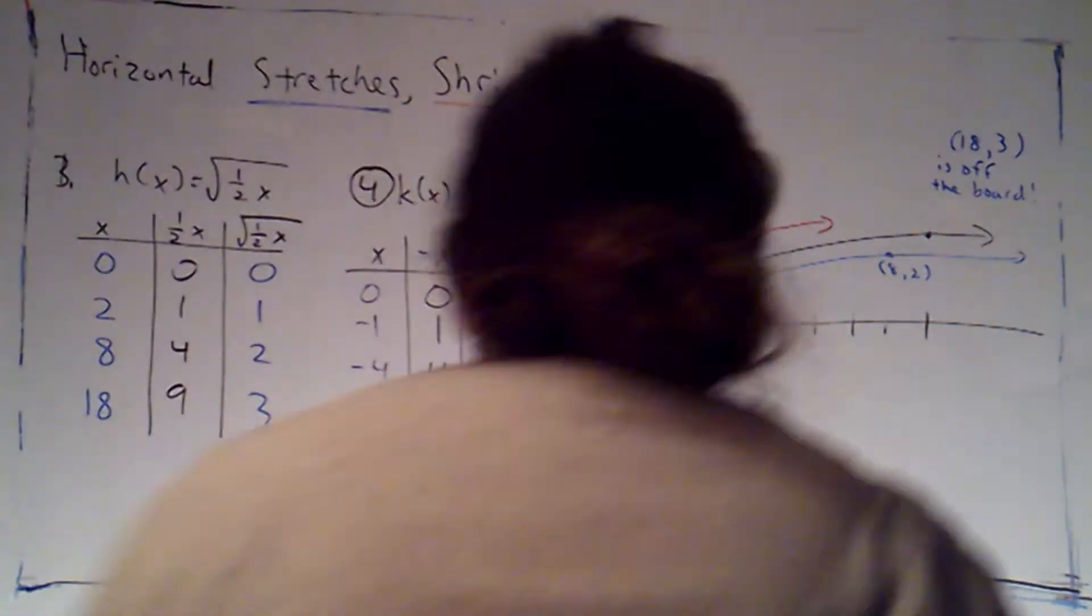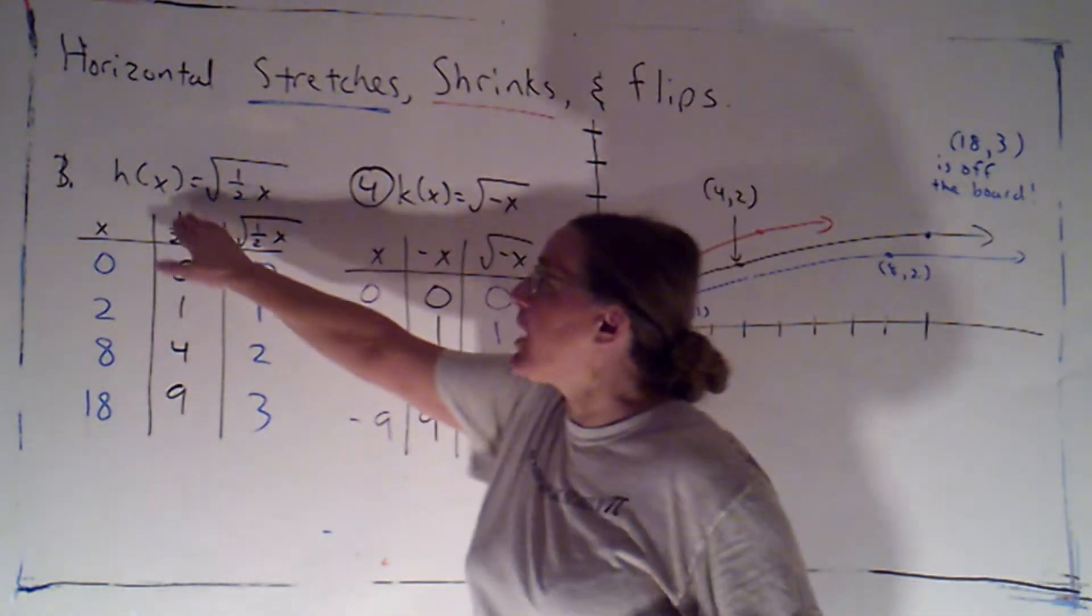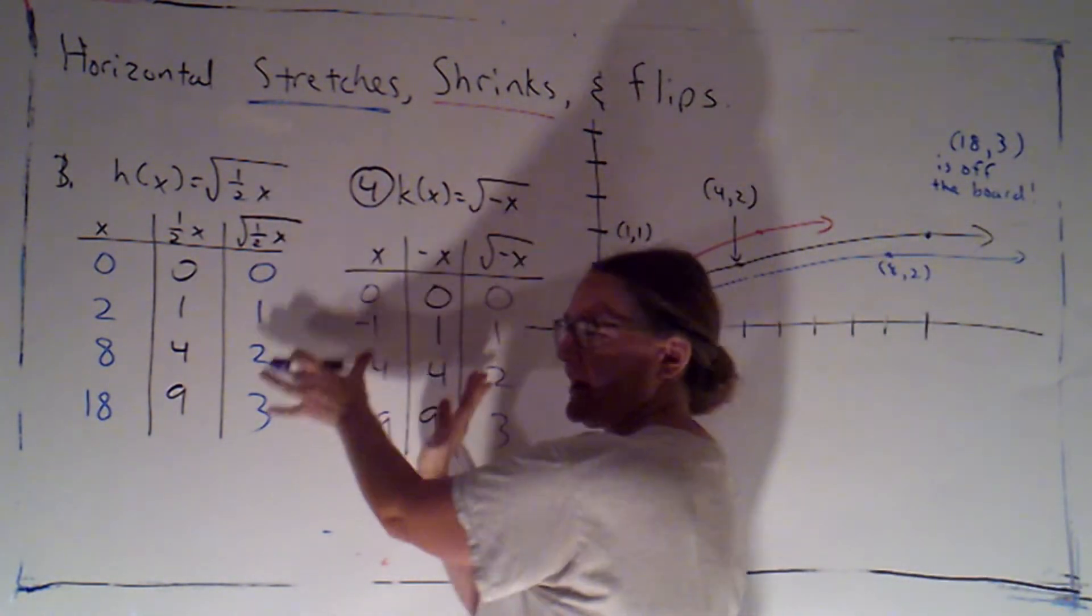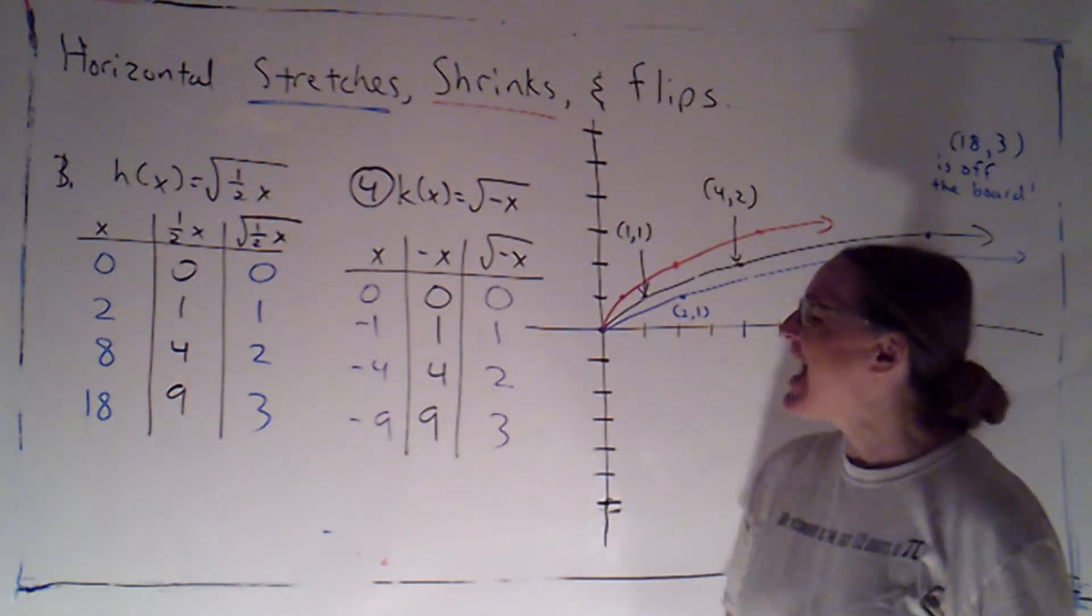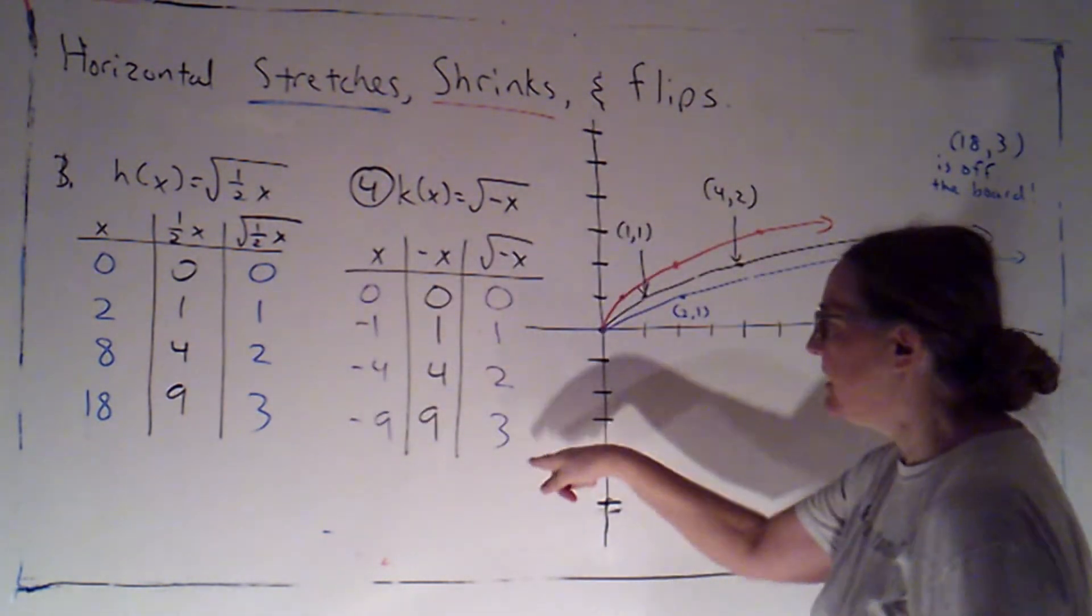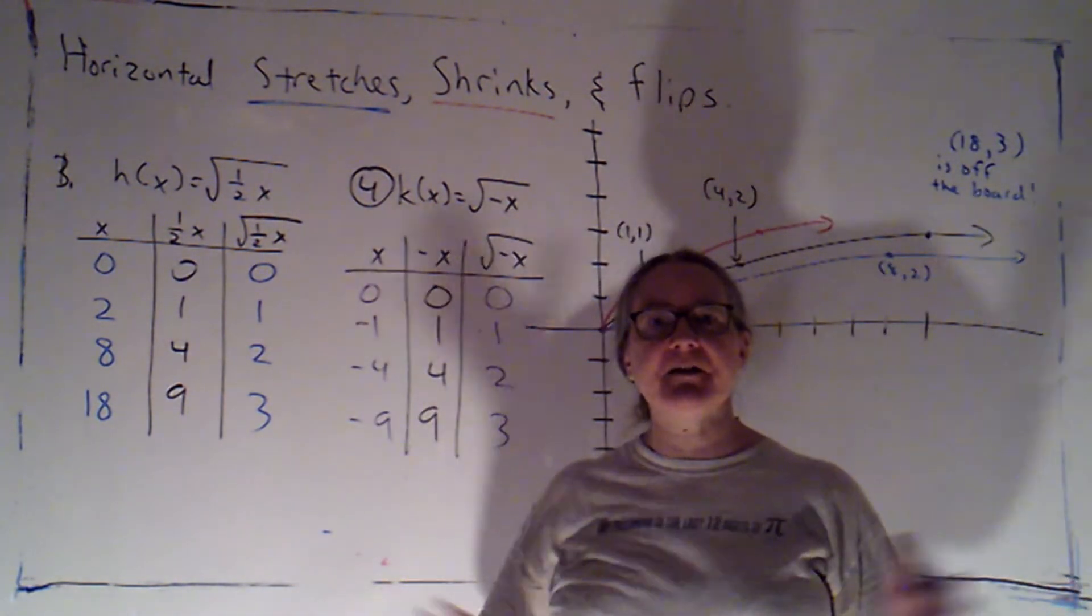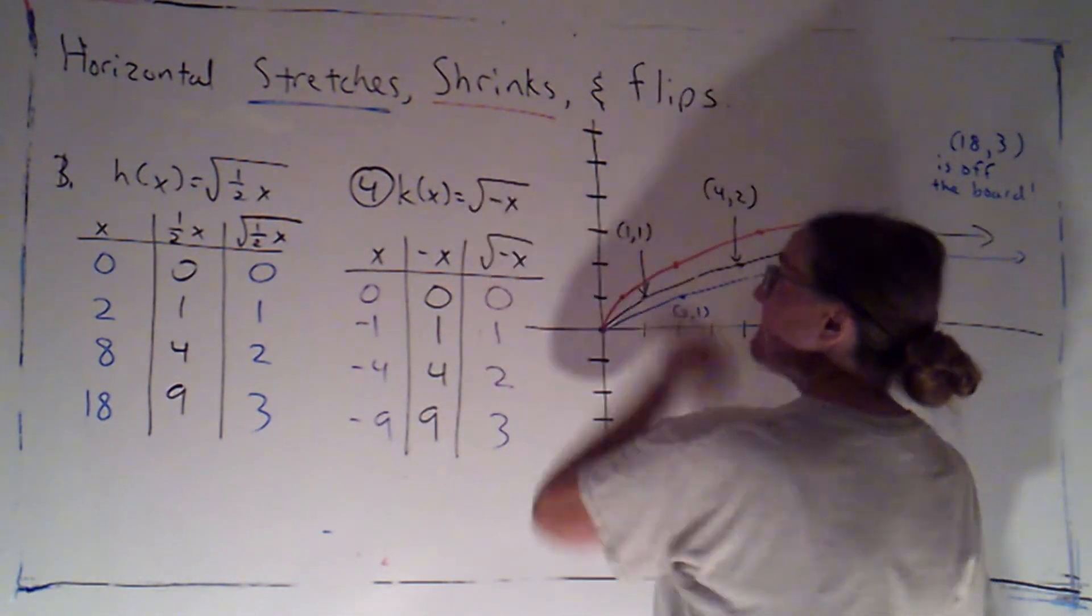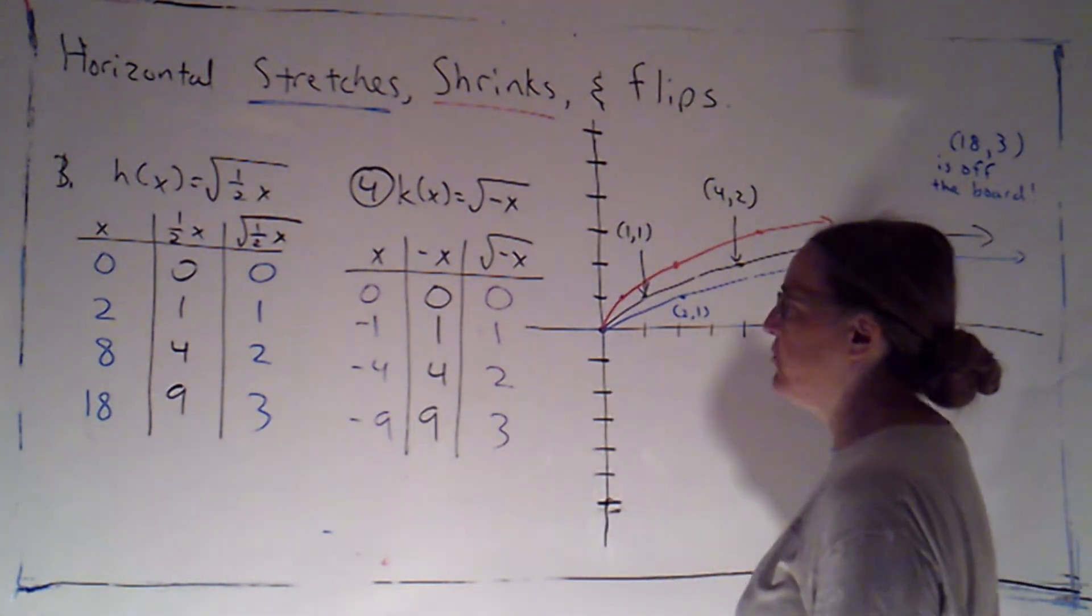I've filled in the tables for both problems and graphed problem 3. I haven't yet graphed problem 4 because the space I'm going to need to graph it is right now taken up by these tables. You'll notice for both of the functions, the y values that we get are exactly the same as the y values we got for the parent function, because I'm not doing anything after I take the square root. I'm changing the input.